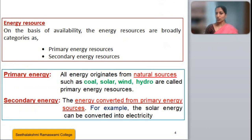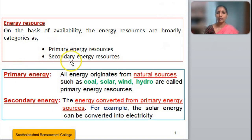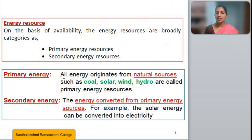Energy resources, on the basis of availability, are broadly categorized into two: primary energy resources and secondary energy resources. The primary energy resources are those that originate from natural resources such as coal, solar, wind, and hydro. These are the primary energy sources, and the secondary energy resources...